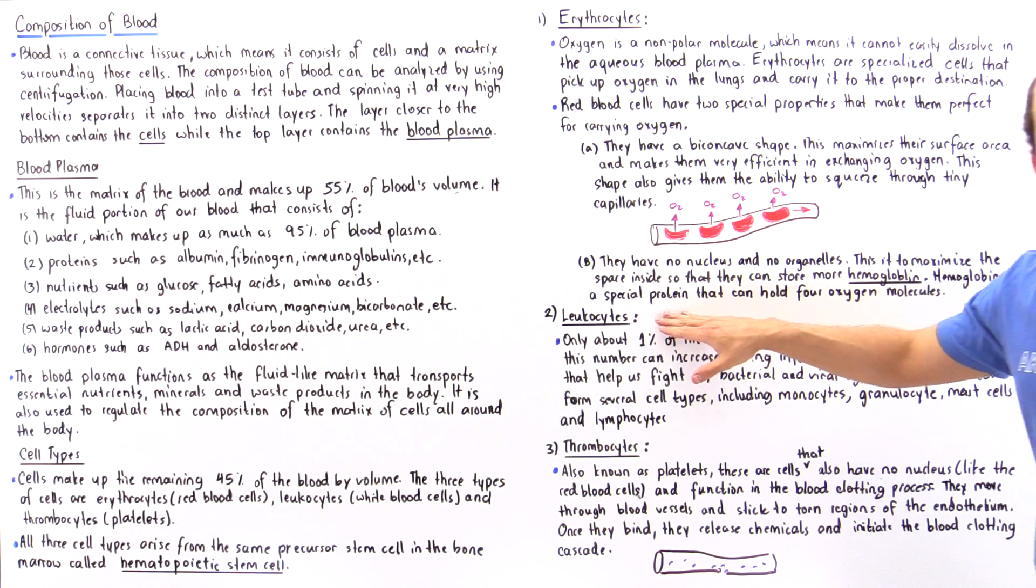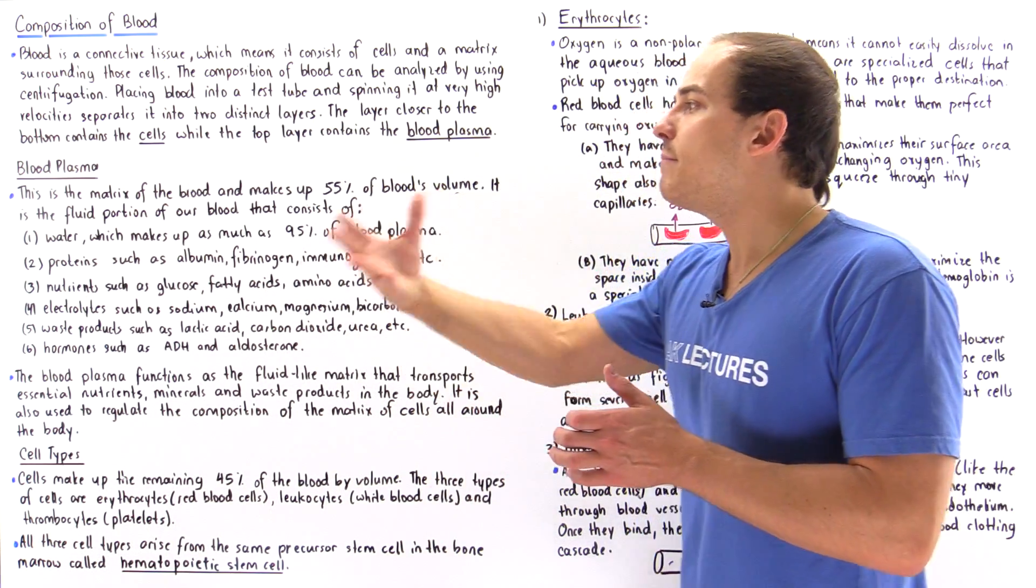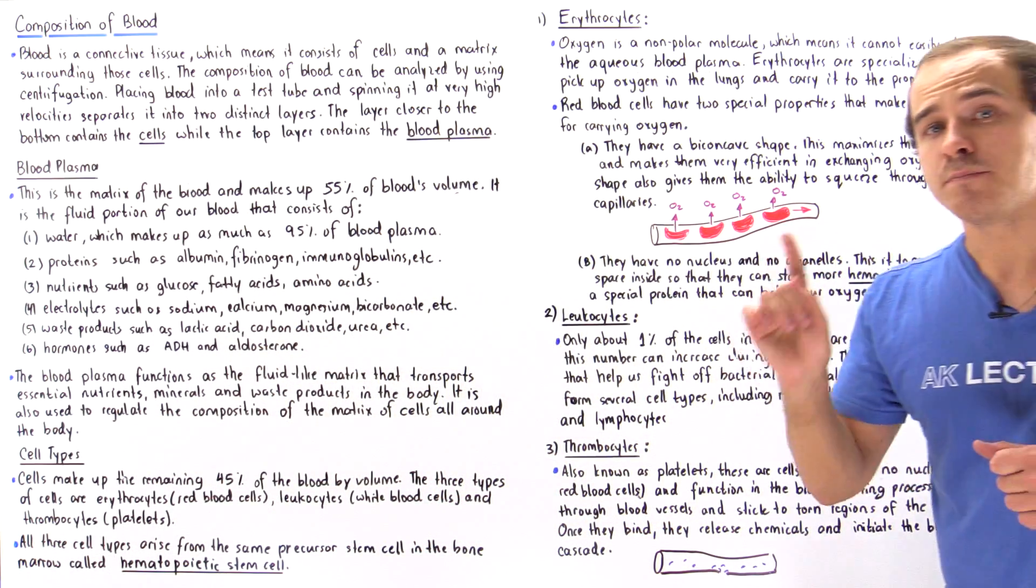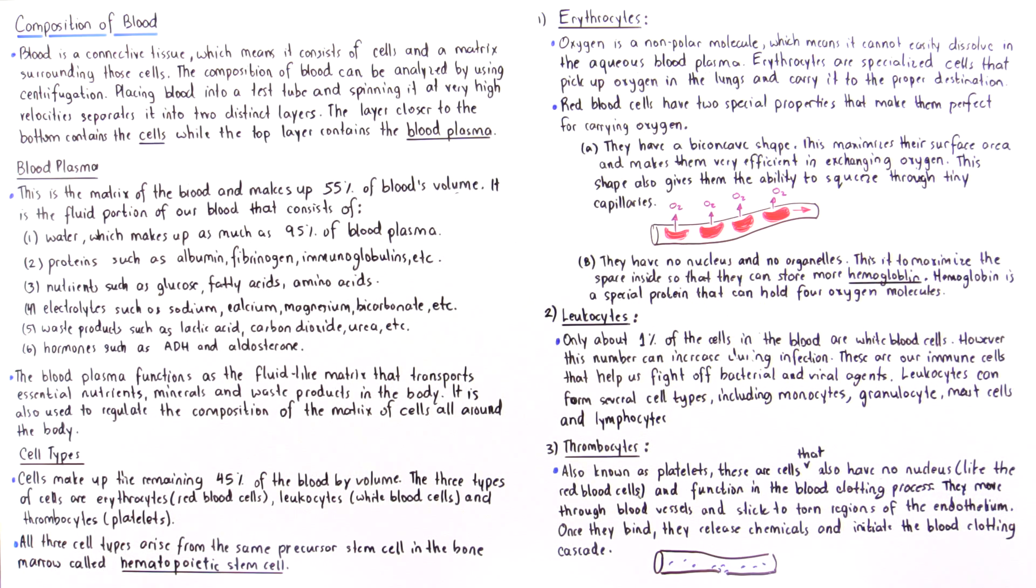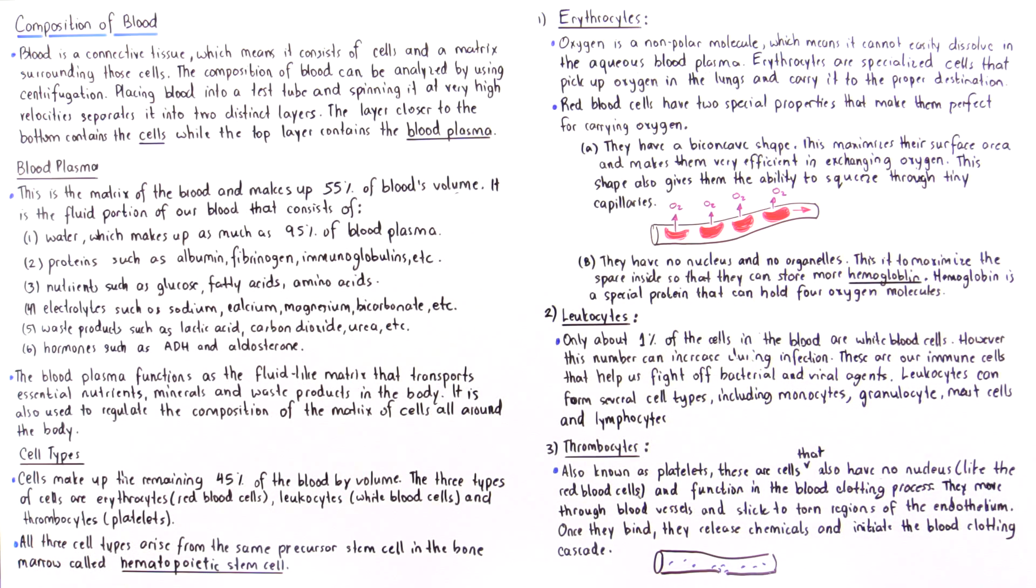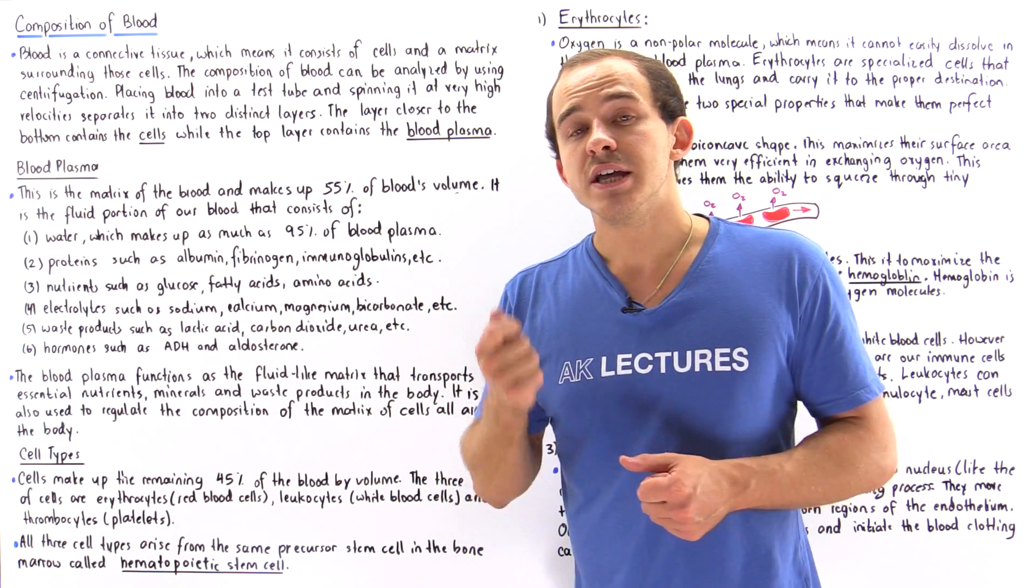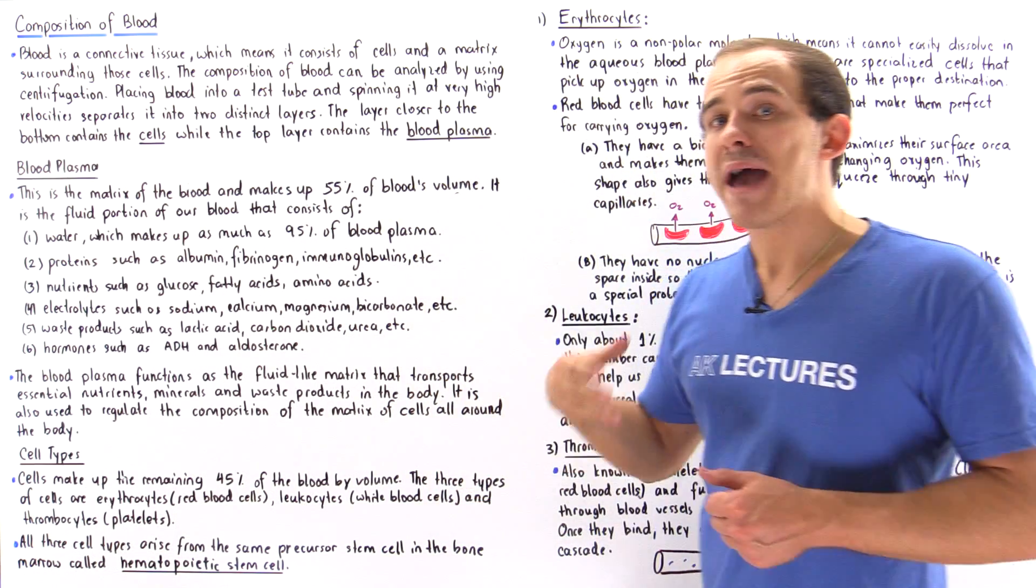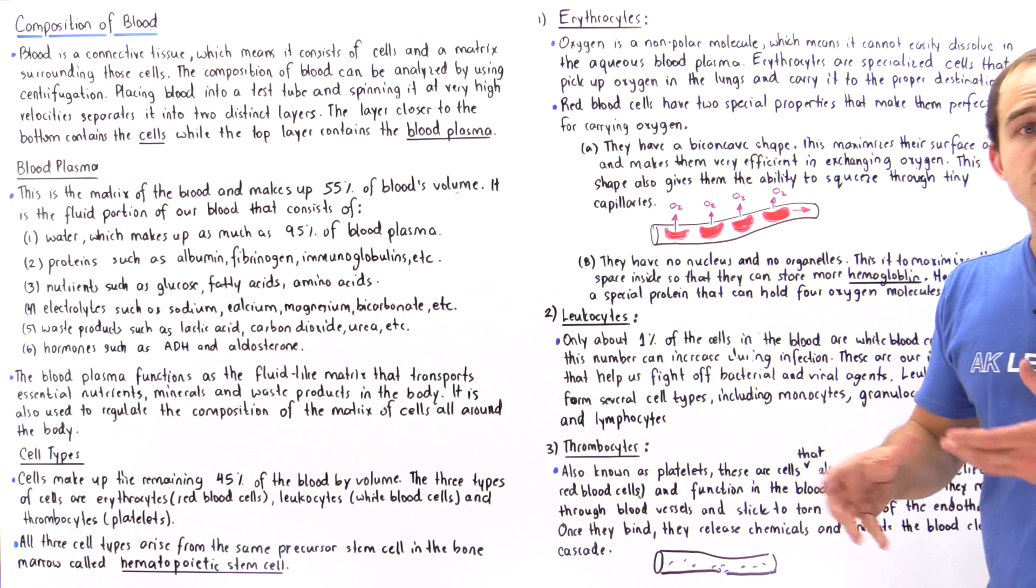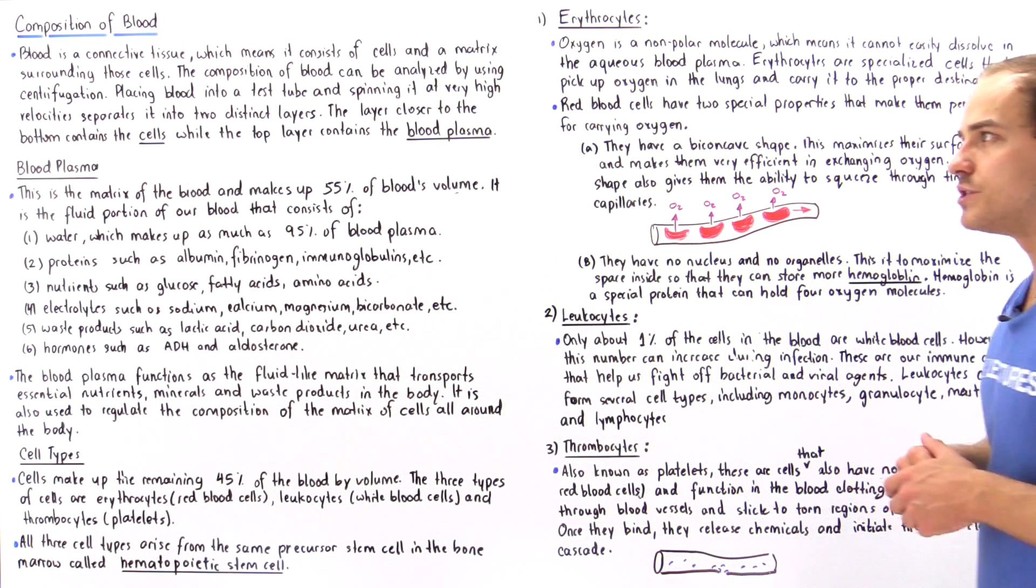Now let's move on to leukocytes. Now our red blood cells make up the predominant portion of the cells of our blood. Leukocytes only make up about 1% of the cells of our blood but when we have some type of infection, this number can greatly increase and this is because leukocytes are actually our immune cells that protect us from bacterial and viral agents.